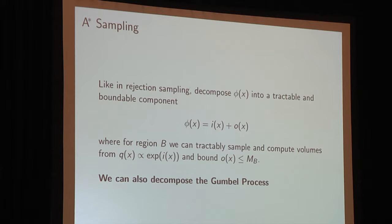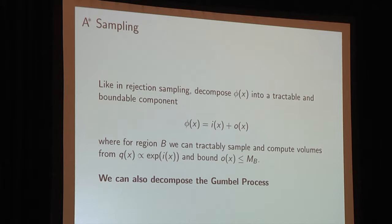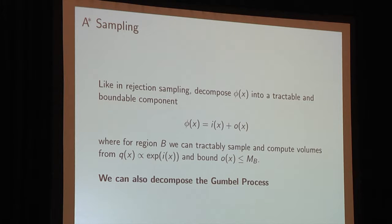The first idea is, like in rejection sampling, to decompose the log density phi into a tractable and a boundable component. I of X is the tractable component and O of X is the boundable component. What we require is that for any subset B, we can tractably sample and compute volumes from a proposal distribution Q of X — proportional to exp of I — and that we can bound O within that region.